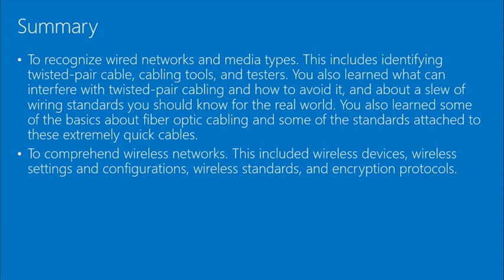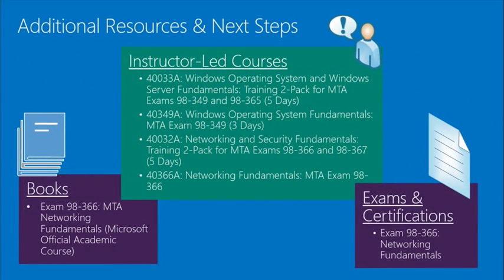To summarize this module: recognizing wired networks and media types includes identifying twisted pair cables, cabling tools, and testers. Comprehending wireless networks includes understanding wireless devices, settings, configurations, standards, and encryption protocols. Additional resources include the MTA Networking Fundamentals Microsoft Official Academic Curriculum book, available for purchase, and instructor-led courses for hands-on practice.